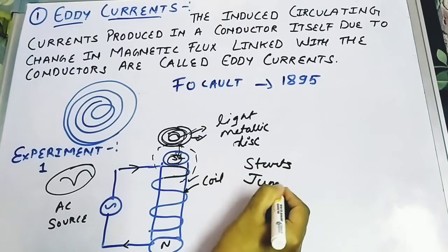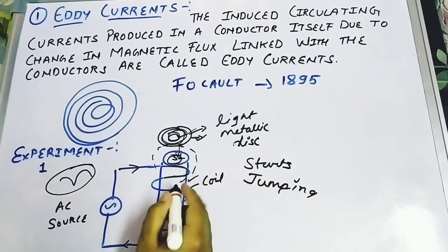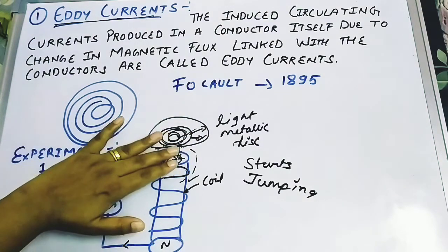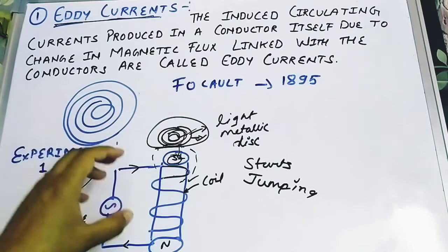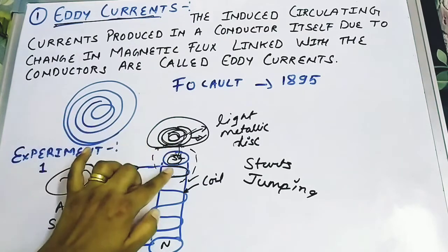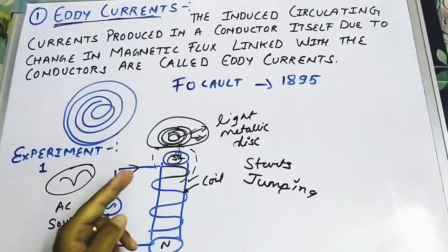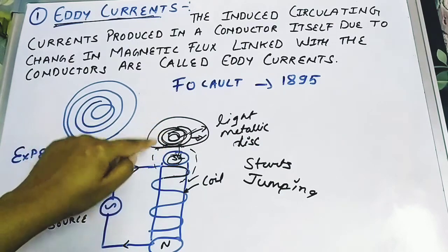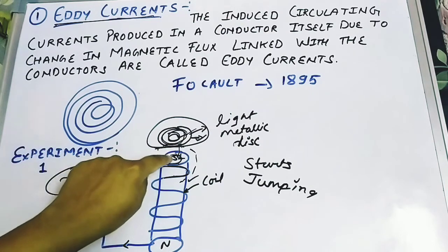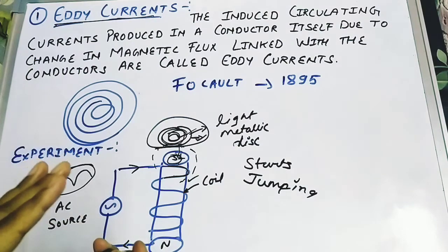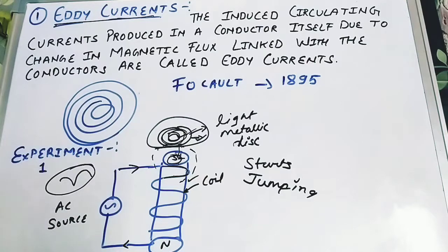This jumping disc gives rise to the current we call eddy current. Initially there is no magnetic field and no current in the disc, but once the current starts building, the flowing current produces a magnetic field, the flux changes, and current gets induced in the disc. Because of this induced current, the same polarity is produced on the disc, and because of the same poles they repel each other. This is the effect of eddy current.